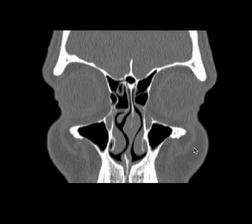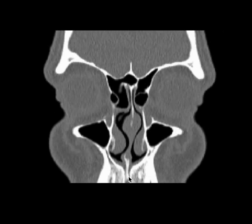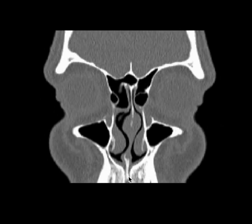The maxillary sinus are seen here and this is the incisive canal where blood vessels and nerves pass, and we can use injections in this area for a nasopalatine block.